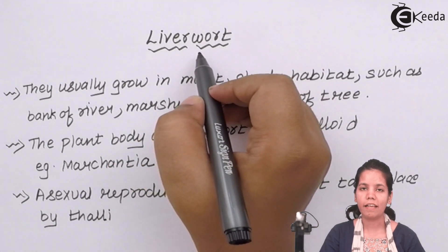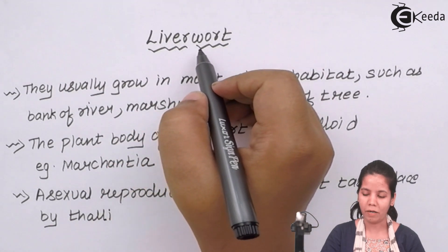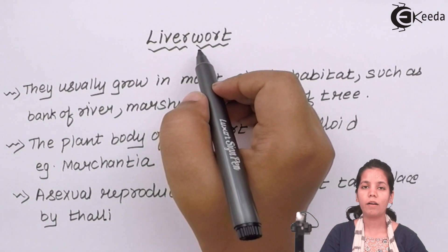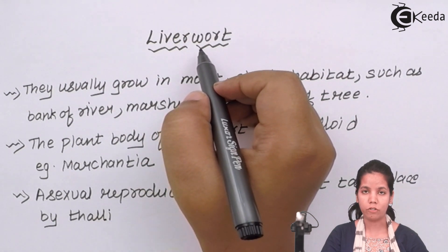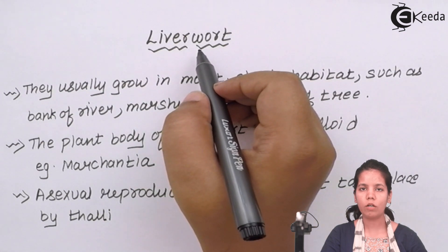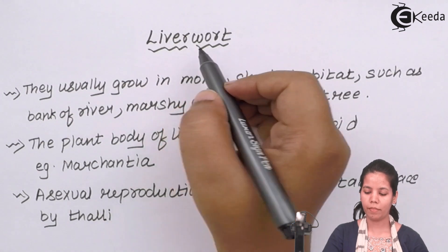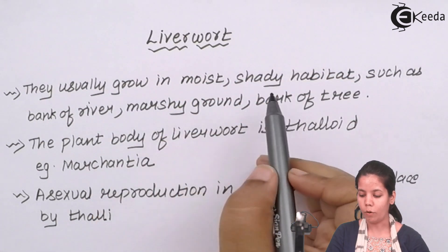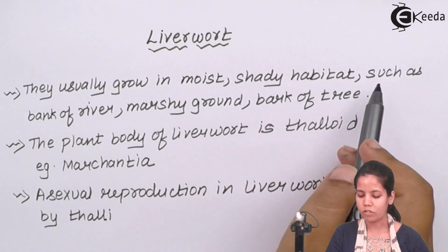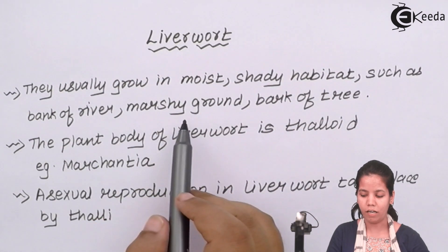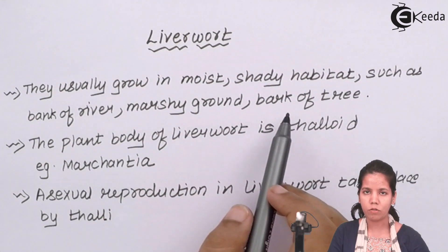Liverworts, an example of Bryophytes, are basically bluish-greenish in color, mostly found in freshwater bodies or sometimes in saltwater bodies. They are usually grown in moist, shady habitats such as banks of rivers, marshy grounds, and barks of trees.